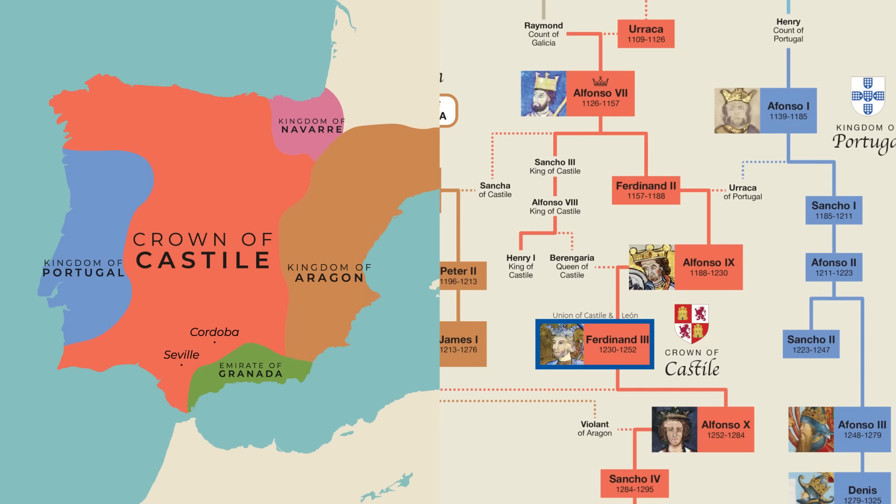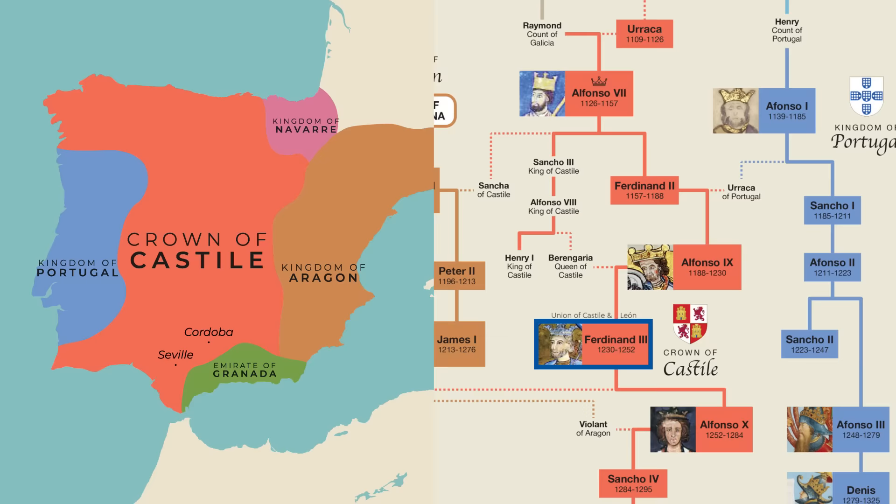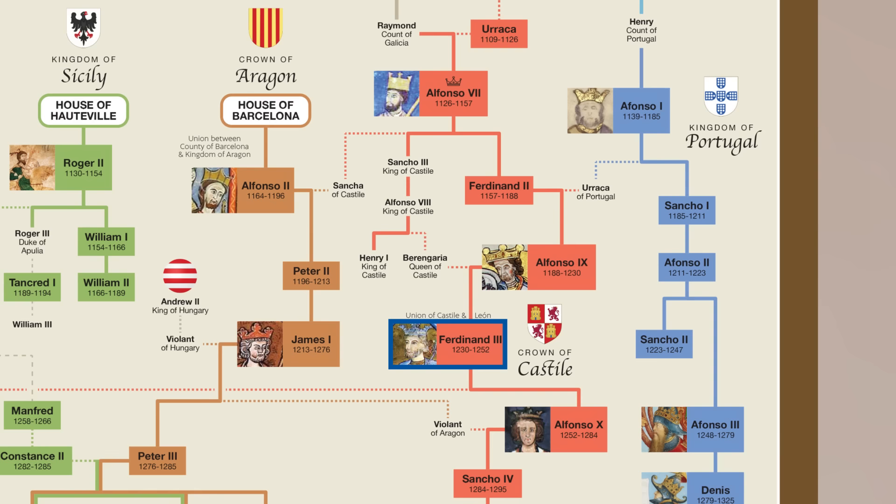The Nasrid Emirate of Granada remained around till 1492, but it was incredibly unstable and there was a ton of infighting between members of the dynasty. The Nasrids made uneasy alliances with the Christians to the north from time to time and fought them whenever they had some free time from all the infighting.